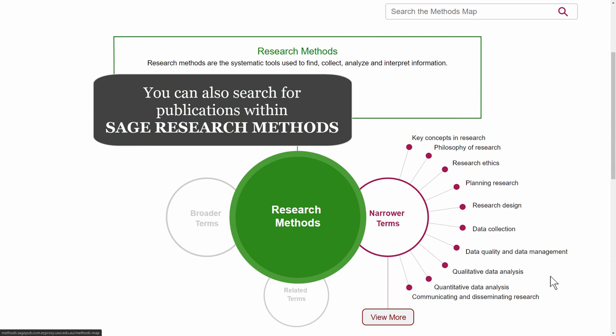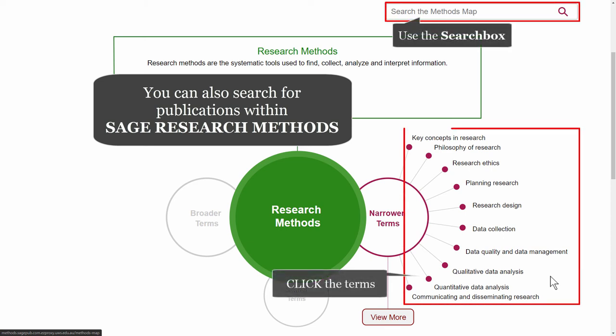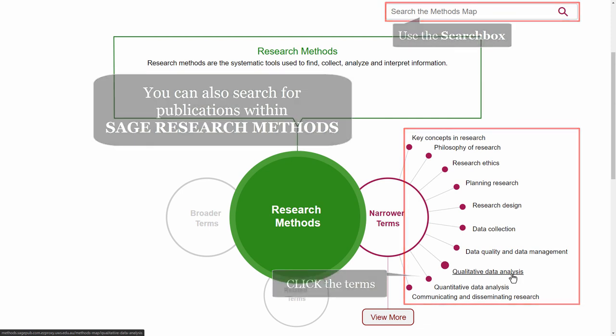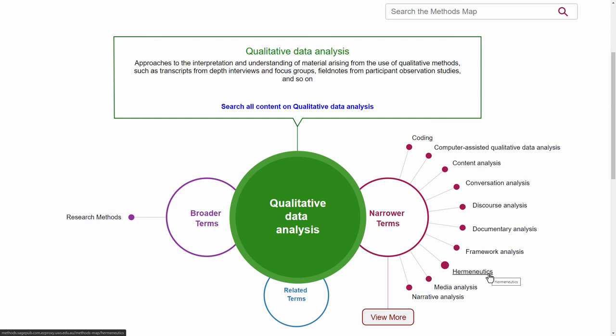You can also search for publications within SAGE Research Methods. I'd like to do a further search for Qualitative Data Analysis — I can use the search box or just click on the term in the map. I can then click on Search All Content for Qualitative Data Analysis.